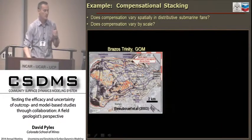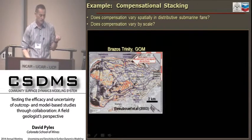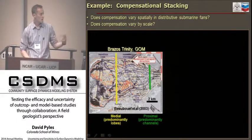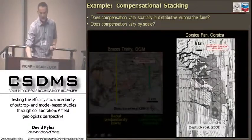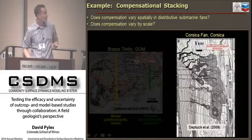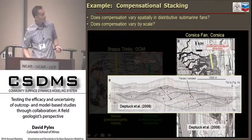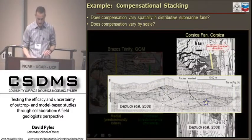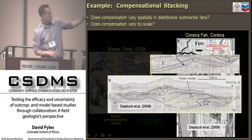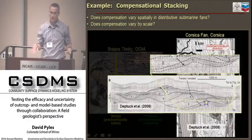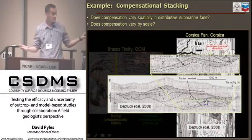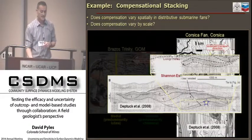Let me take you back to the outcrop. First, I'm going to use this methodology to address the question of how compensational stacking varies spatially in a submarine fan—specifically, if I compare up-dip and down-dip parts of the system, are they the same? The second thing is to describe how compensation varies by scale. Looking back at this cross-section, lobes 1 through 11 are highly compensational, but if we surgically extract and look deeply into lobe 1, the seismic reflections are all superimposed on one another, indicating that compensational stacking may be a scale-dependent, non-fractal process. We can test these ideas using outcrops.